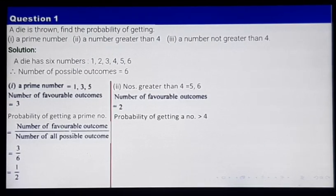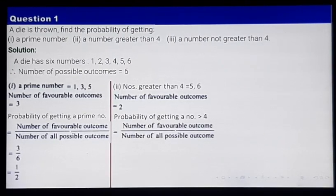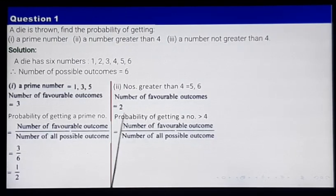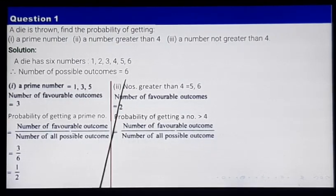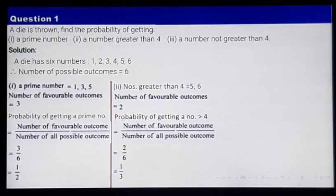Probability of getting a number greater than 4 equals: number of favorable outcomes is 2, and number of possible outcomes is 6. So the answer is 2 by 6, which is nothing but 1 by 3. This is my second answer.